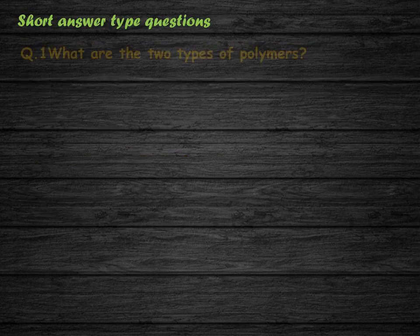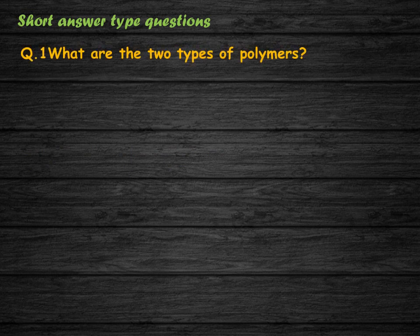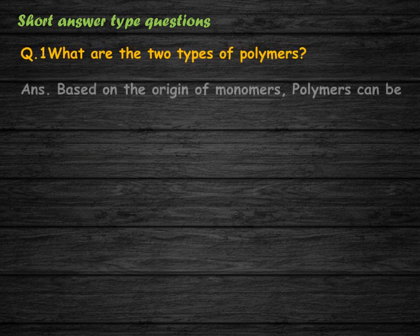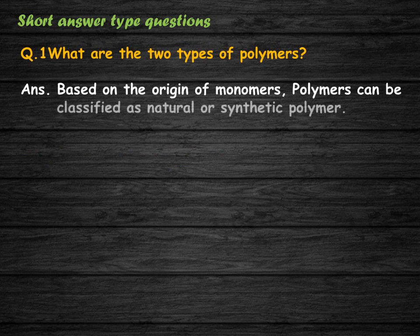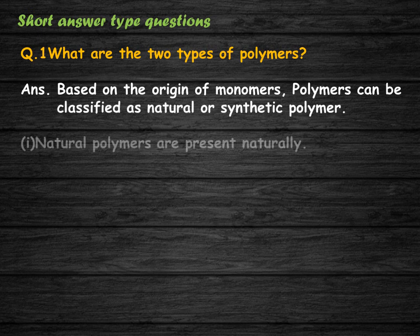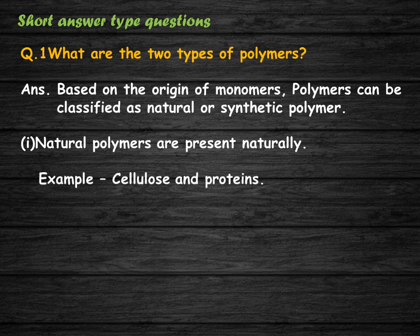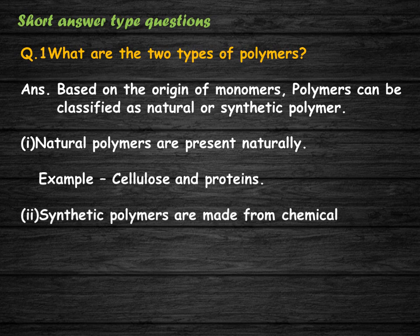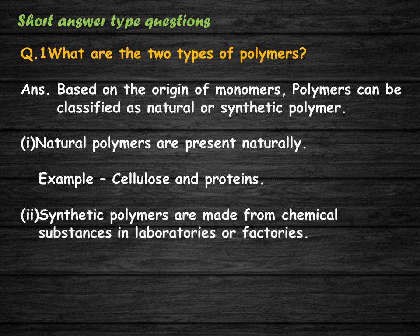Short answer type questions. What are the two types of polymers? Based on the origin of monomers, polymers can be classified as natural or synthetic. Natural polymers are present naturally; examples include cellulose and proteins. Synthetic polymers are made from chemical substances in laboratories or factories; examples are plastics and polyester.